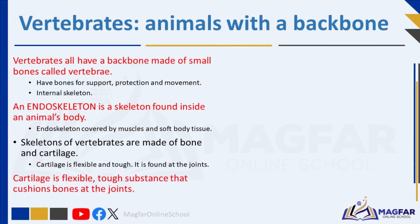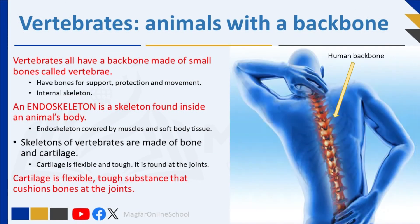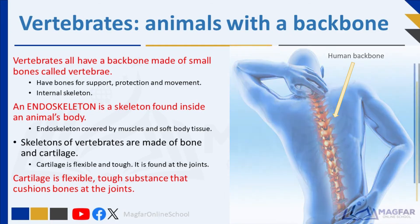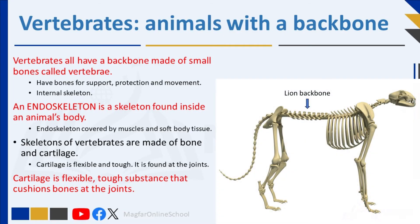Now let's talk about animals that have a backbone — they are also called vertebrates. You can call them the bony bunch because they have bones. Vertebrates make up about 5% of all animal species. They use their bones for support, protection and movement. They have an internal skeleton which supports their body and allows them to move. This internal skeleton is called an endoskeleton. An endoskeleton is a skeleton found inside an animal's body, and it does not protect an animal as well as an exoskeleton does, but it can support larger sizes and more weight.